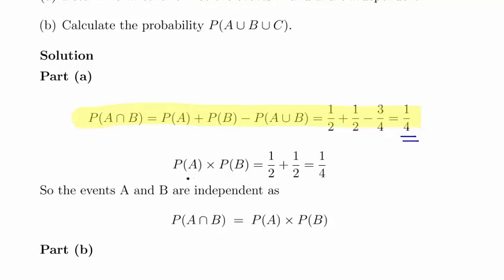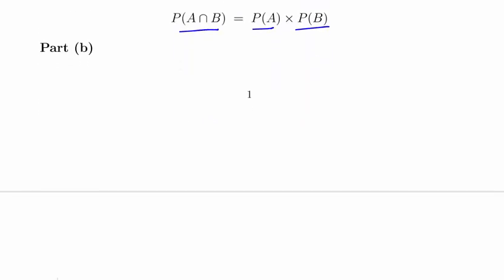So what the second thing is that if A and B are independent, A intersection B will be equal to probability of A times the probability of B. And indeed that's actually what I get. 1 half times 1 half is equal to 1 quarter. So A and B are independent of each other according to that rule.